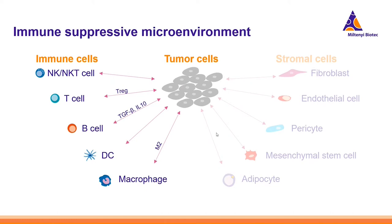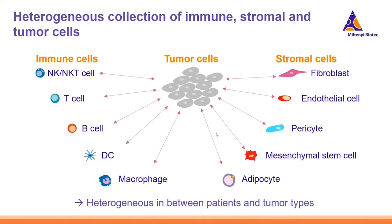These advances in TME understanding have enabled the development of really effective therapies, such as immune checkpoint inhibitors. One important thing, as mentioned, is that the TME is a super heterogeneous collection of immune, stromal, and tumor cells. It is not only heterogeneous between different tumor entities, but also heterogeneous between patients having the same tumor, or even within the tumor itself, where different compartments can have different functional states.